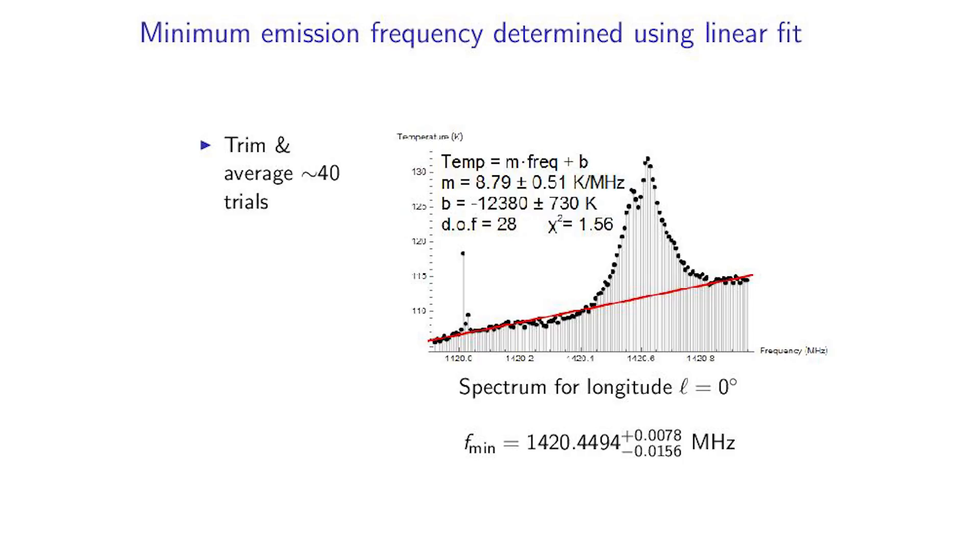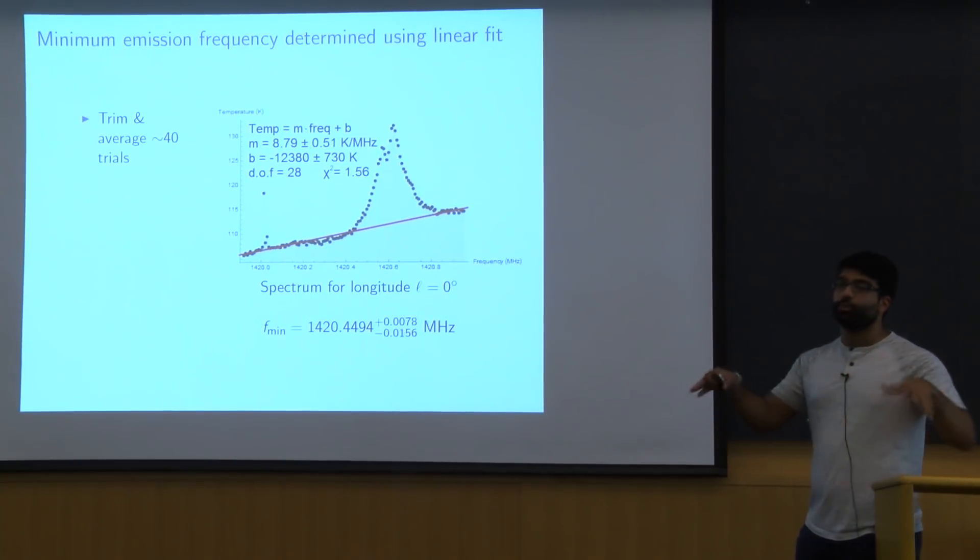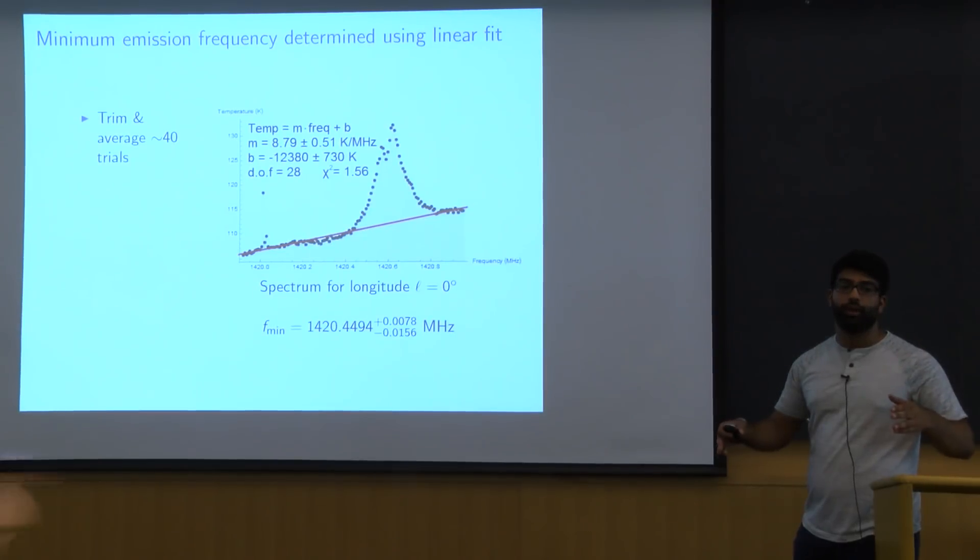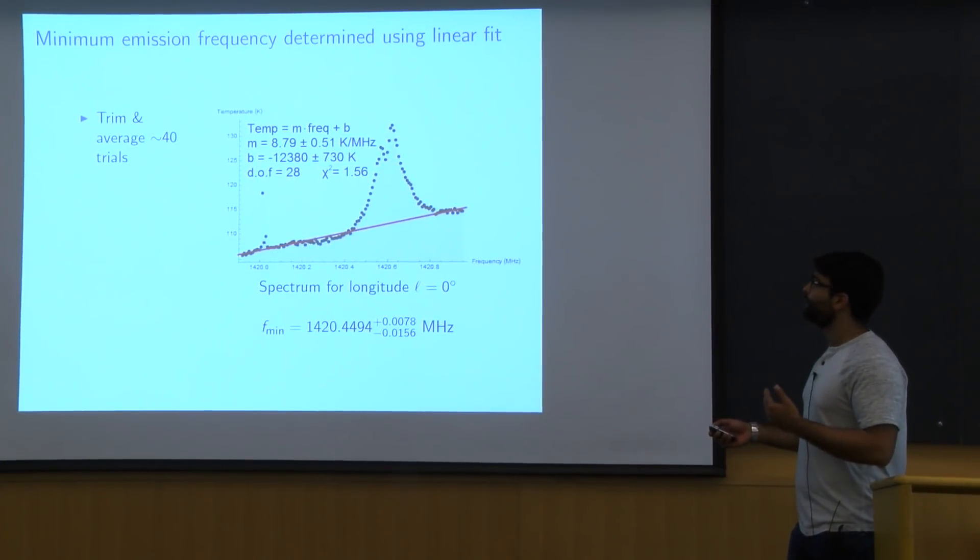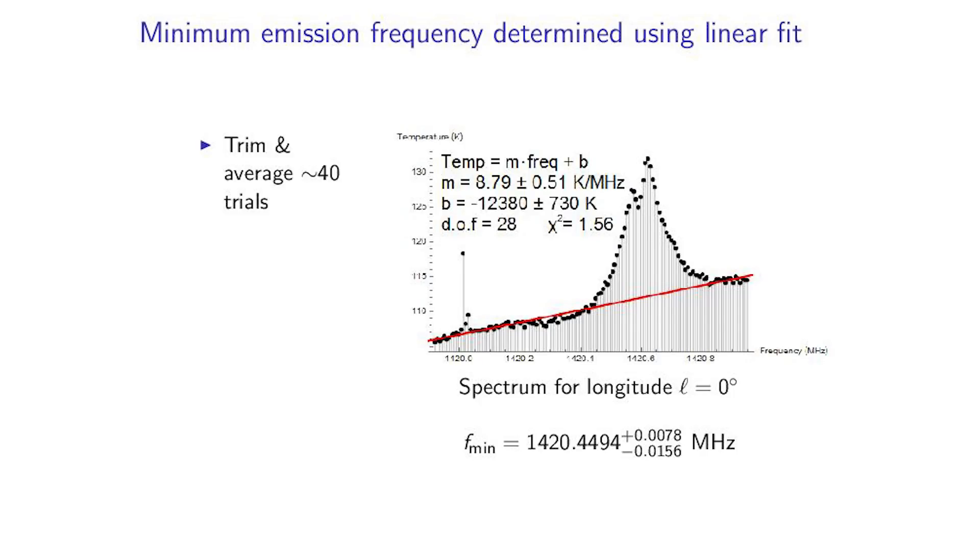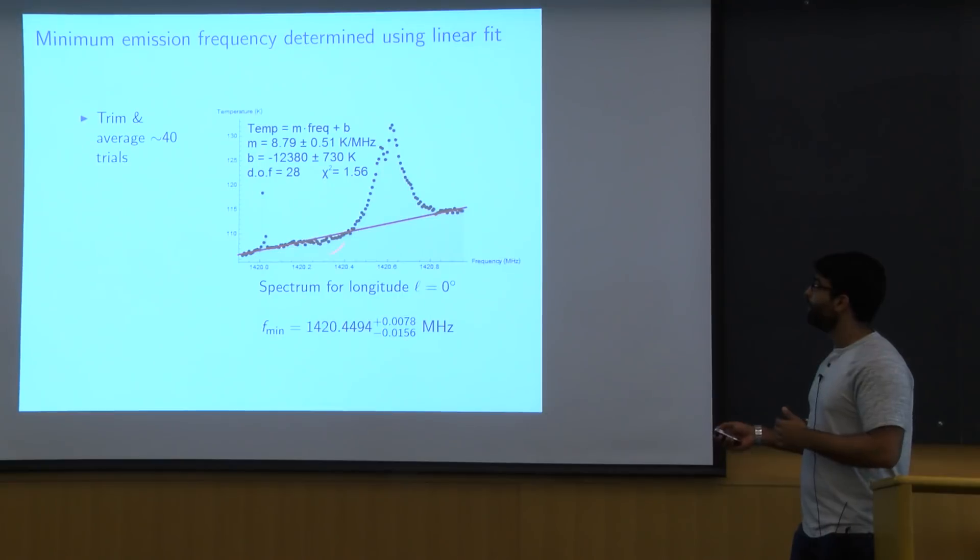So we wanted to determine this maximum velocity. That's equivalent to determining a minimum frequency. So how are we actually going to get that minimum frequency? So as we said before, we have this temperature spectrum as a function of frequency. We're going to start off by trimming off the edges. There's just a very quick fall off just from the bandpass filter there. So we have to get rid of those. And at each given longitude, we take about 40 trials and we average that into one temperature spectrum.